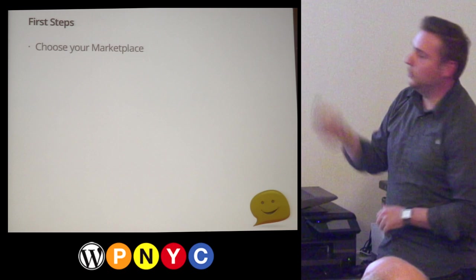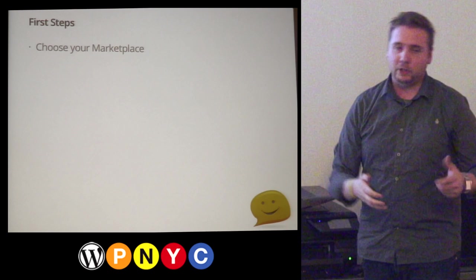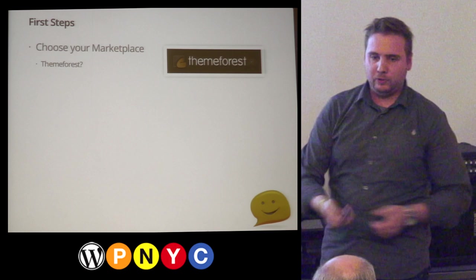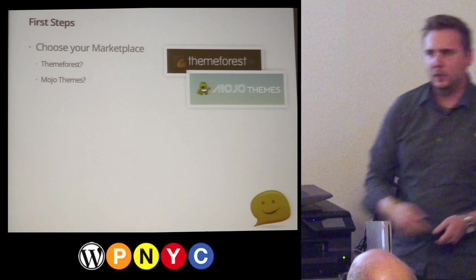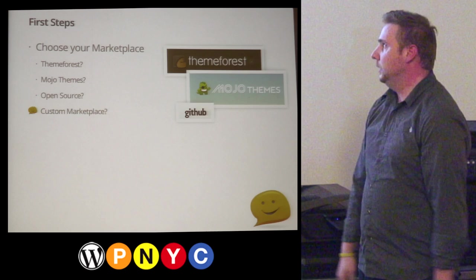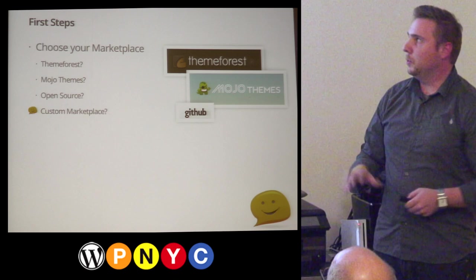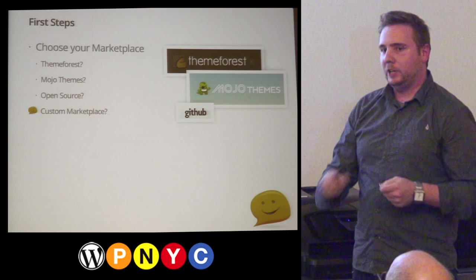We also needed to choose our marketplace — where we were actually going to sell our themes, or if we were even going to sell them. There's a couple of options: ThemeForest, Mojo Themes (we've actually partnered with them in the past), GitHub where you can put your code for free, or the route we took — a Custom Marketplace. That's where you have the most control, you're not getting ripped off, and there's less of a percentage taken off at the end.